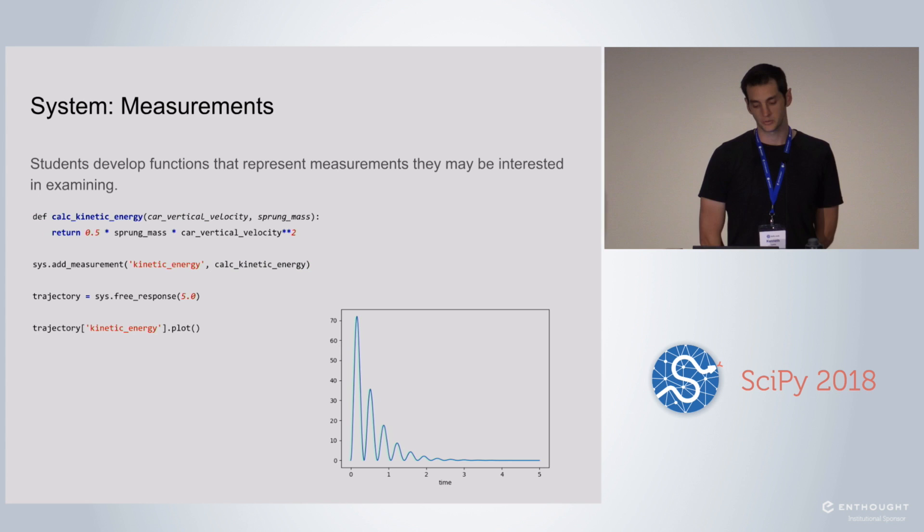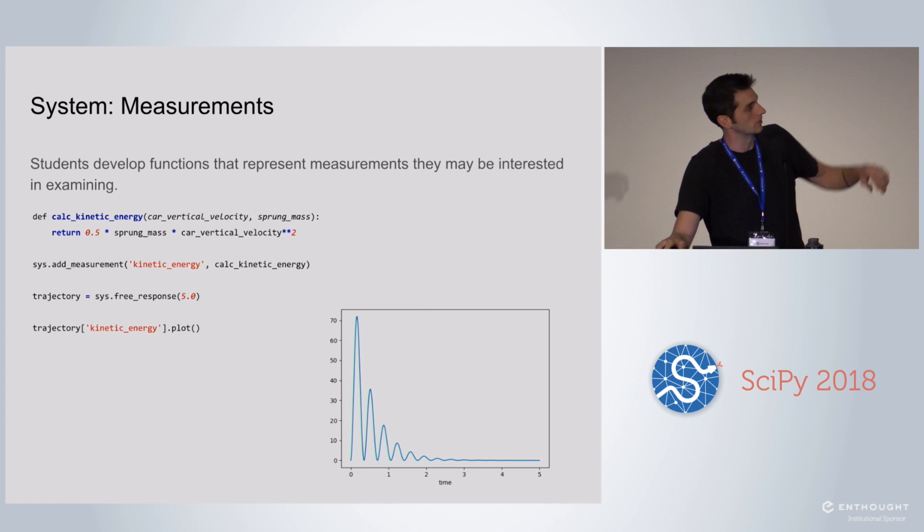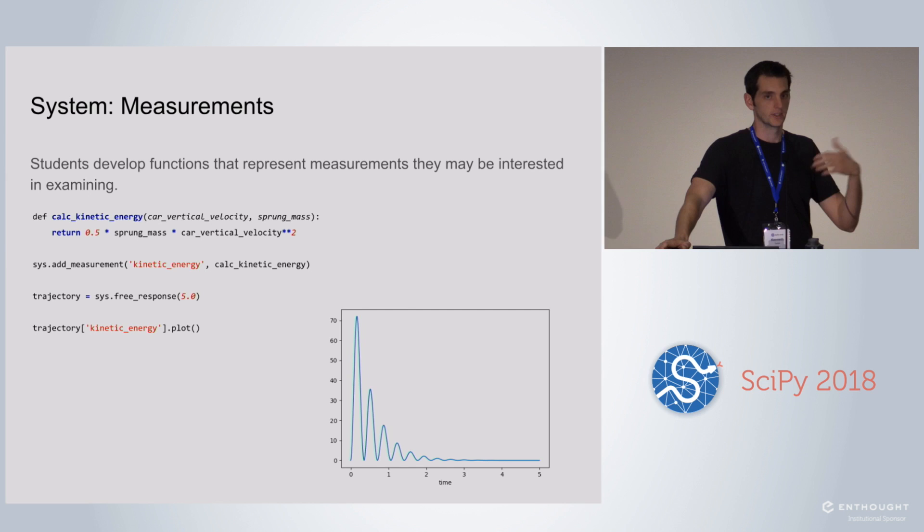Another thing you can do with systems is create measurements. Again, the thinking here was make it like it's a real physical thing. You can put a sensor on and you can get the measurements out. In this example, it's kinetic energy. You create a function that computes the measurement that you want, and it takes in any of the constants or the coordinates that you want from the system by name. Again, we avoided object-oriented programming and creating classes by having them write functions, and then add those functions as attributes to the object. You can see at the bottom that you add the measurement like that. Then you can do the free response, and then the measurement comes out in the trajectory that you get as an auxiliary output.